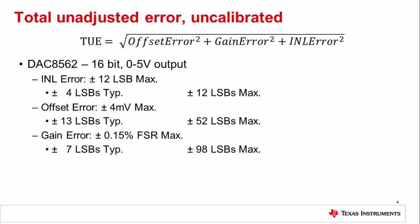Using the max values from the datasheet and plugging them into the TUE equation, the DAC8562 has plus or minus 112 LSBs of total unadjusted error. Using the typical values from the datasheet, the error drops to plus or minus 15 LSBs.